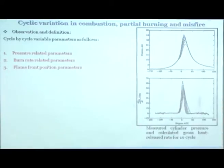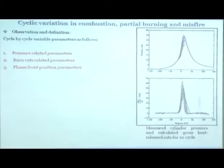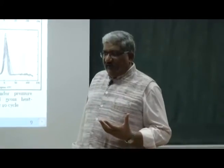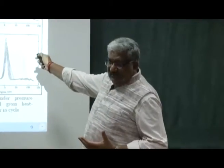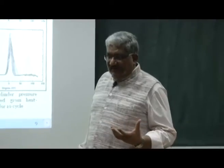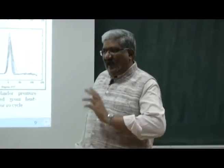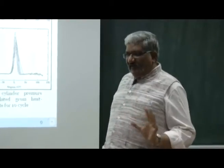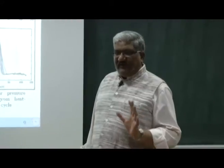In order to avoid the situation where we are not able to decide which cycle to analyze, we take a large number of cycles of data — 250, 500, or 1000 cycles. Once you have acquired, say, 1000 cycles, you take the average and analyze that. If you take the next 1000 cycles and average those, the difference between the two averages will be negligible — they will be essentially the same.